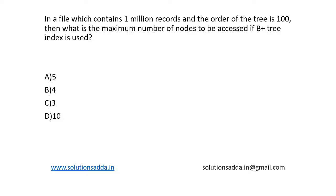This is a question from database. A file contains 1 million records and the order of the tree is 100. What is the maximum number of nodes to be accessed if B+ tree indexing is used? Four options are given.